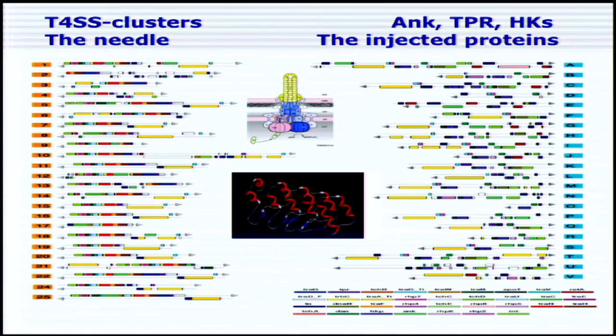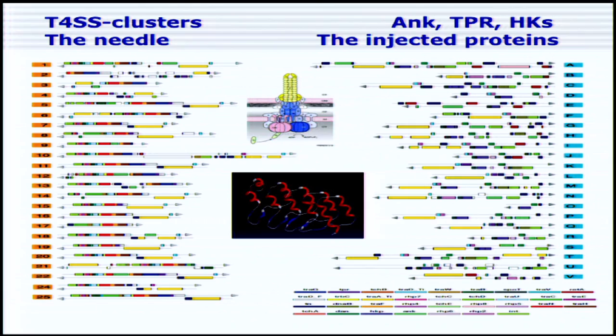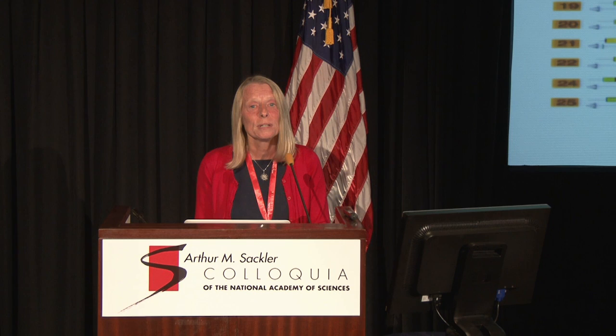This was really astonishing. It turned out that these repeats are gene clusters for type 4 secretion systems, and next to them are small genes for proteins like ankyrin repeat, TPR, and histidine kinases, which are typically eukaryotic-like proteins. It has been shown subsequently that several of these are used to modify host cellular functions.